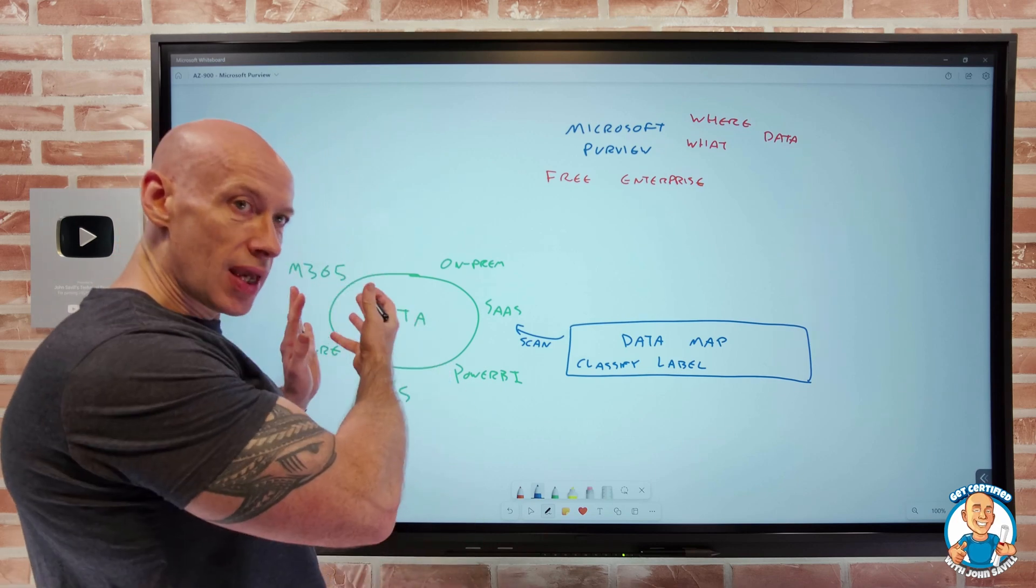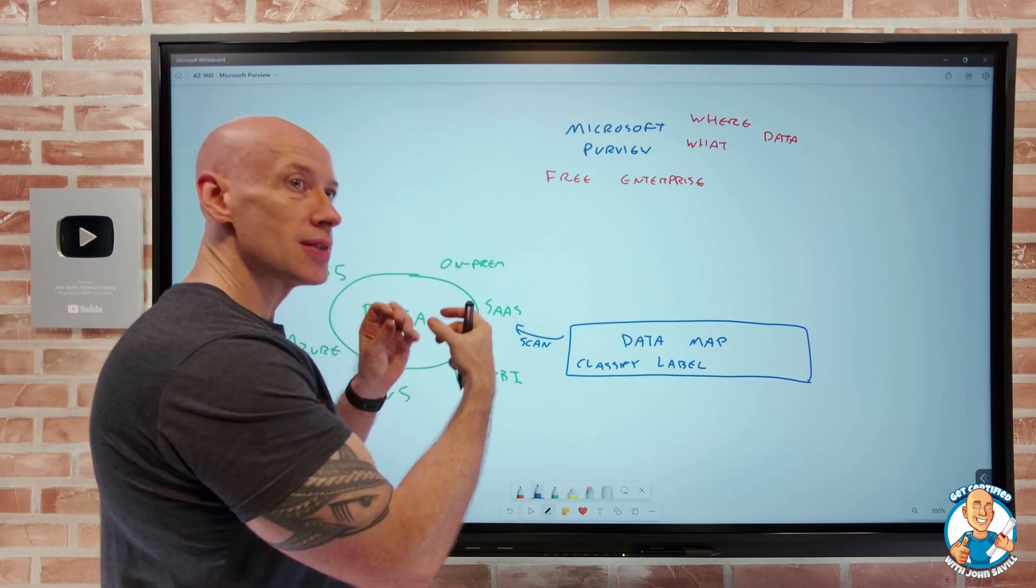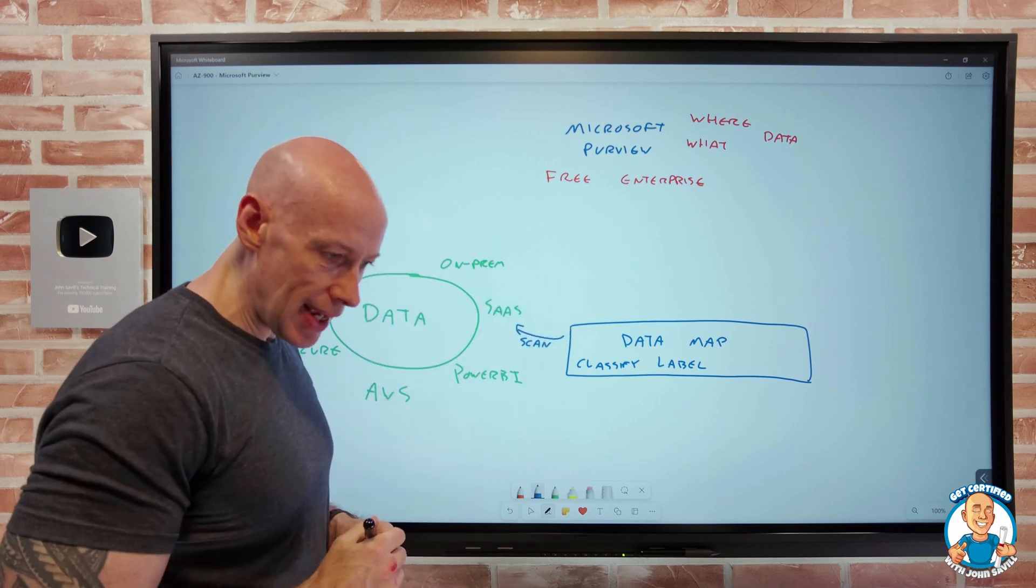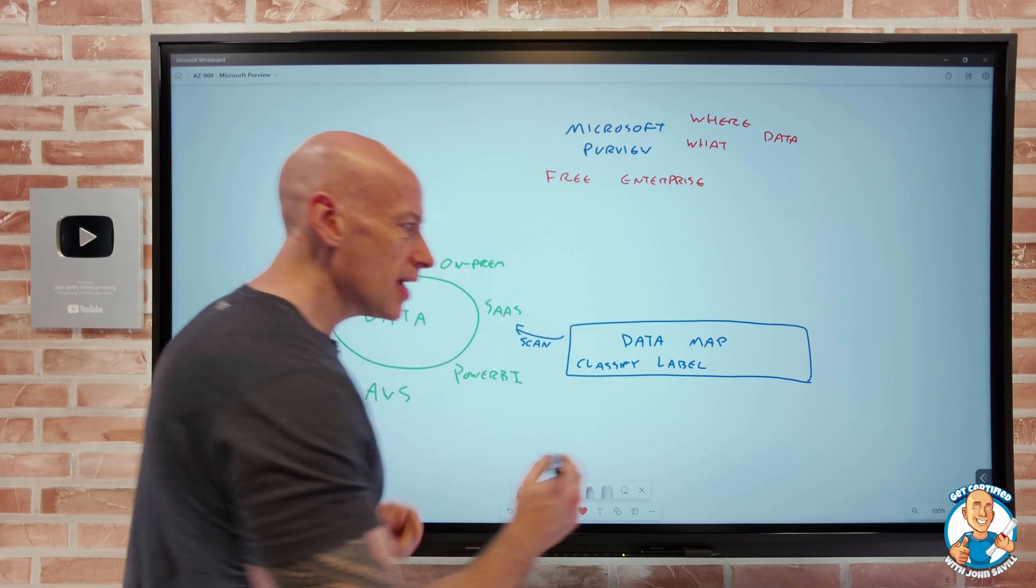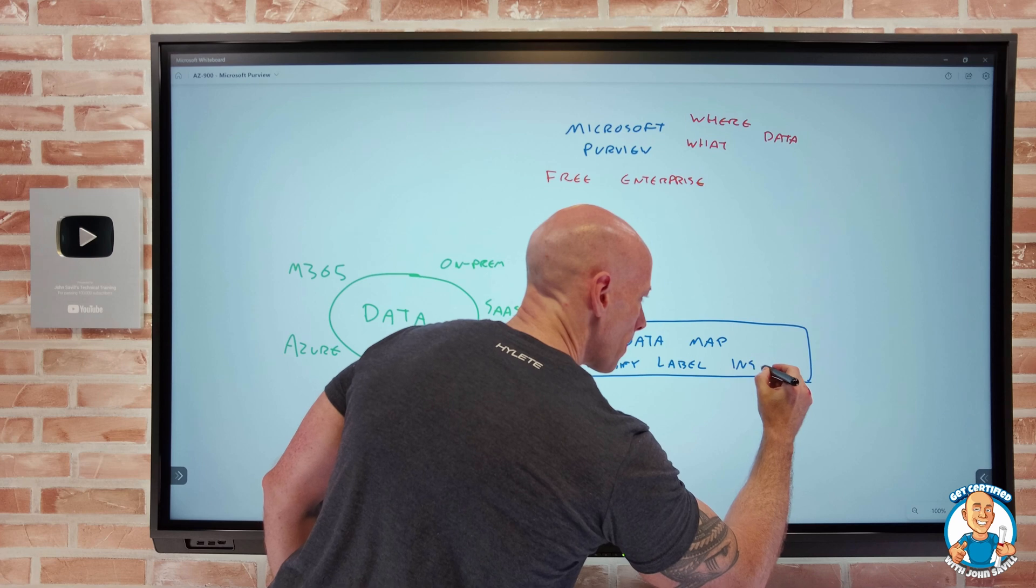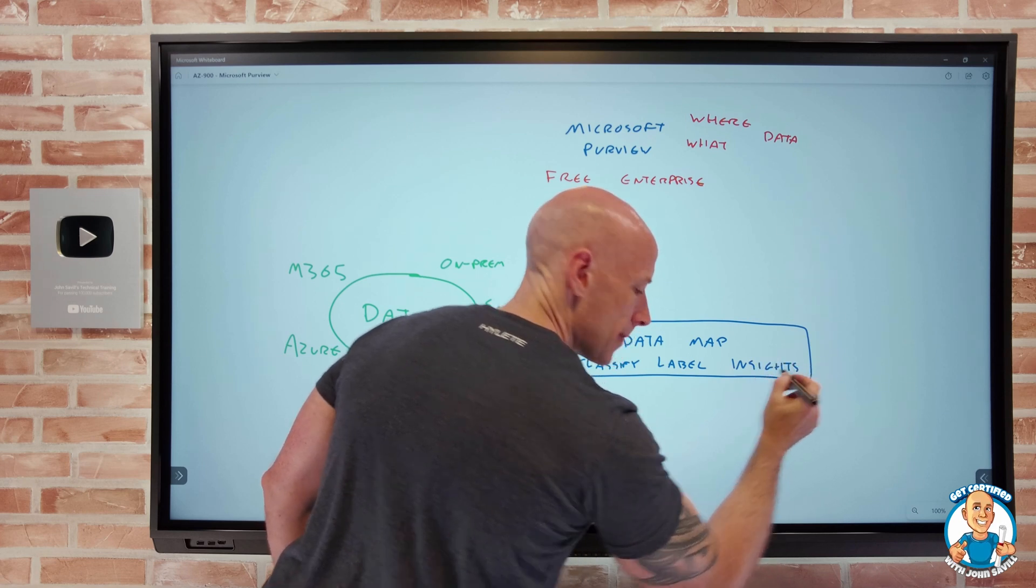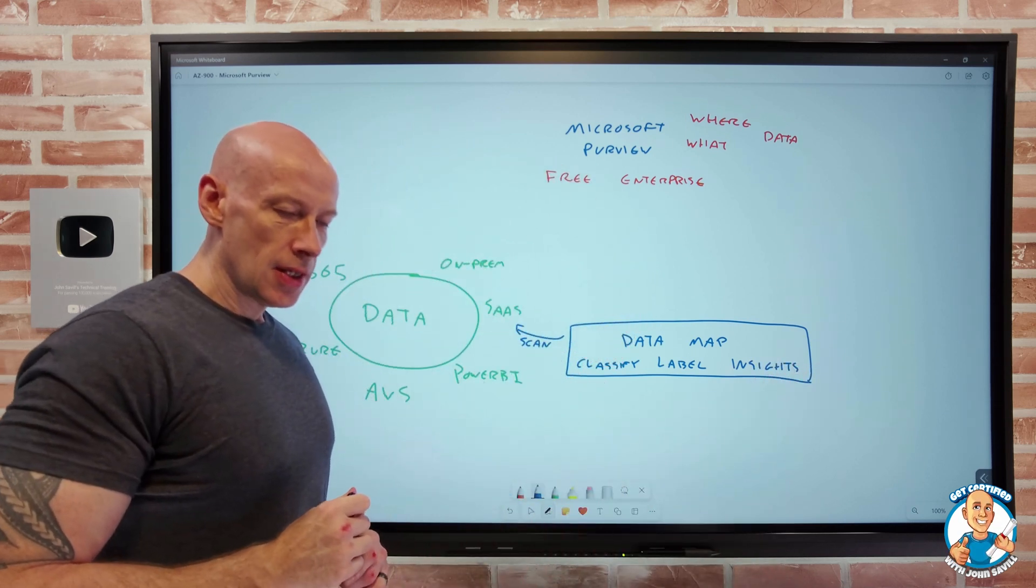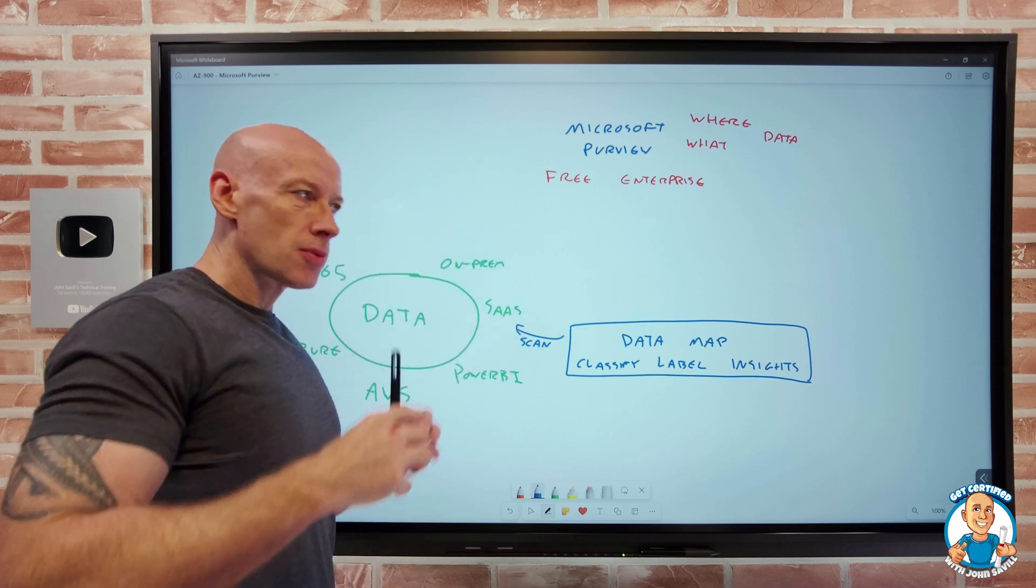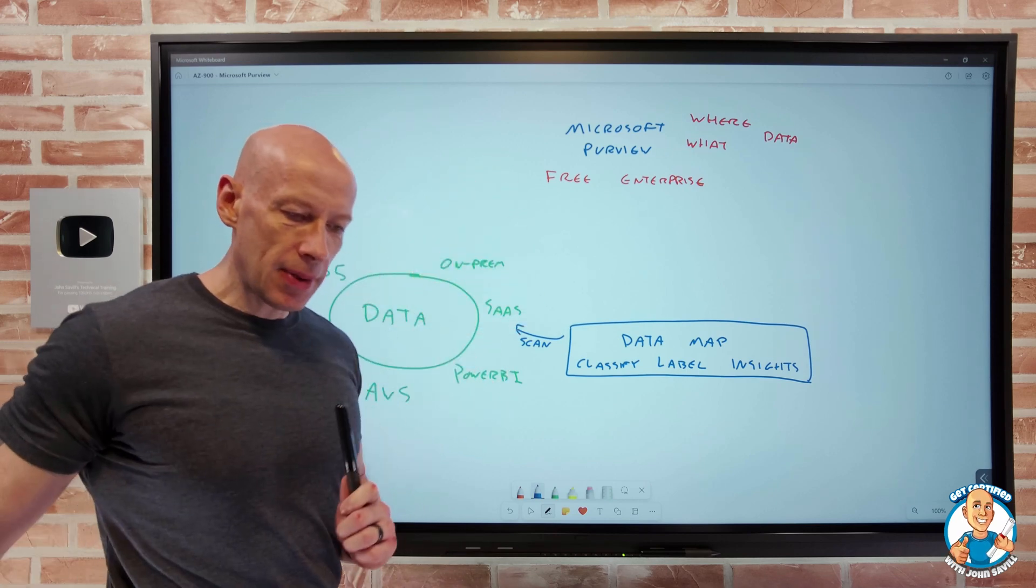It can also do things like data lineage. So the data came in through here, it went through these transformations, it's been saved over here and here. It can give me insights into my data because it's now got this complete view of everything happening in the environment.